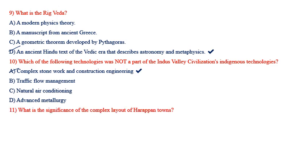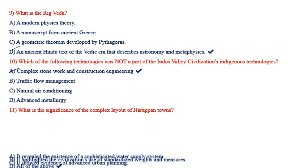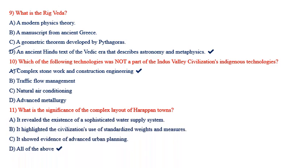What is the significance of the complex layout of Harappan towns? Options: it revealed the existence of a sophisticated water supply system; it highlighted the civilization's use of standardized weights and measures; it showed evidence of advanced urban planning. The answer is all of the above — these are all significance of the complex layout of Harappan towns.